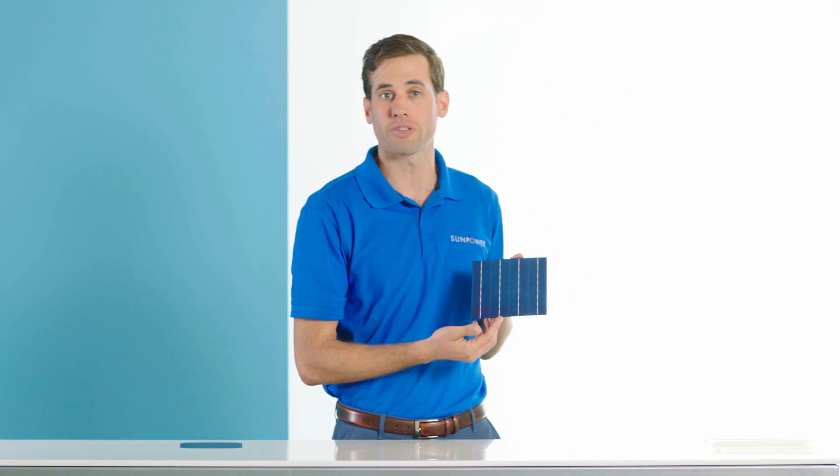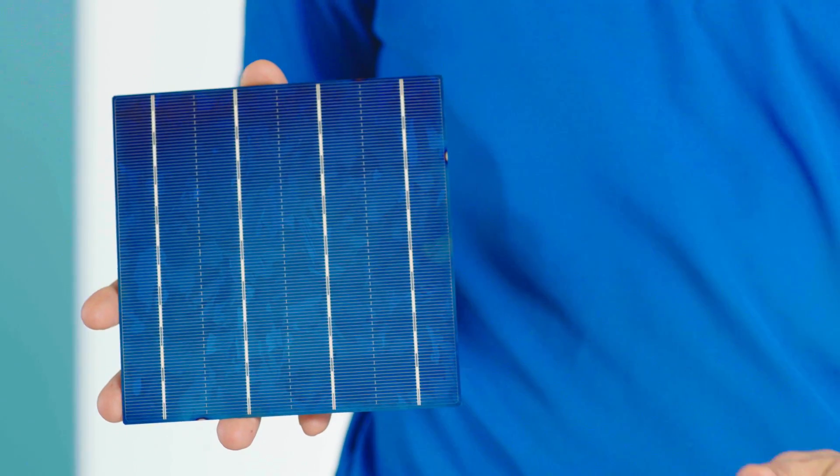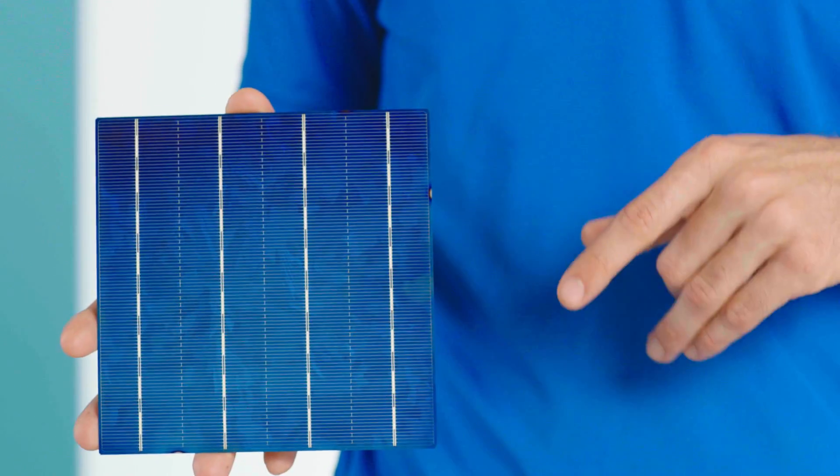Now this is a conventional cell. As you can see, it's a thin silicon wafer with metal lines pasted on the front right over the active solar surface.